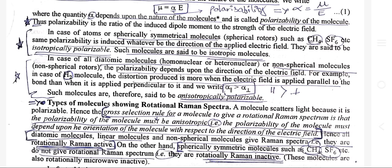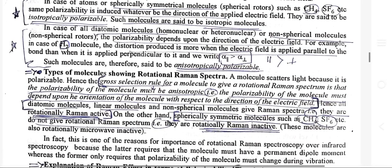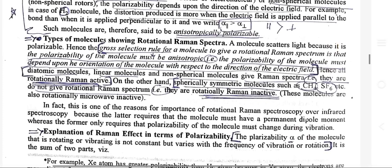In the case of all diatomic molecules or non-spherical molecules, the polarizability depends upon the direction of the electric field. For example, in the case of the H₂ molecule, the distortion produced is greater when the electric field is applied parallel to the bond than when it is applied perpendicular to it, so α∥ > α⊥. Such molecules are therefore said to be anisotropically polarizable.